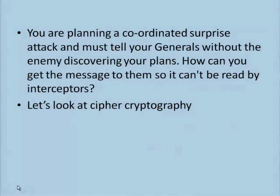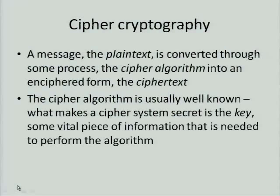I'm going to talk to you a little bit about cipher cryptography. In cipher cryptography, you have a message, which is what's called the plain text. This is converted by some process called the cipher algorithm into an enciphered form, which is called the cipher text. The cipher algorithm itself is usually quite well known — it's generally published, and people know how to do this process. What makes your cipher special is the key, which is some secret piece of information that's vital to know in order to be able to perform this process.